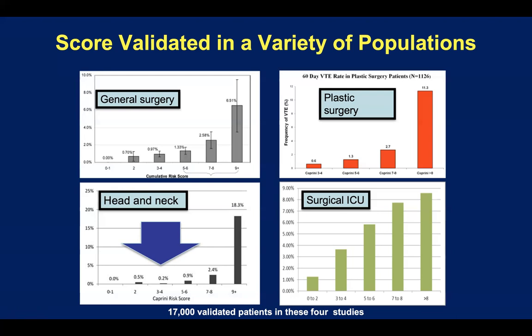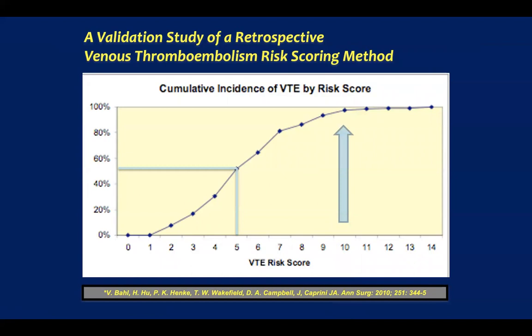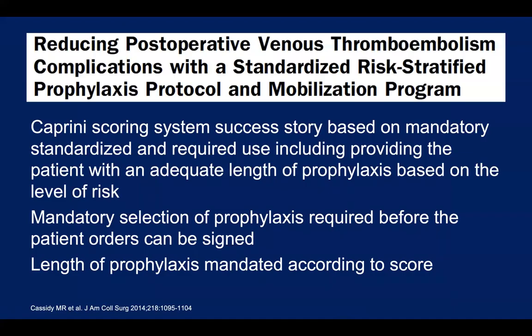This is the pillar of Caprini scoring — it's not complicated. Patients with low risk scores don't need any anticoagulation. Patients with standard risk scores need standard prophylaxis, which is seven to ten days. Those people in the very high risk group need extended prophylaxis. In one of the original studies at the University of Michigan, patients who hit a score of 10 — almost all of them had a clot.